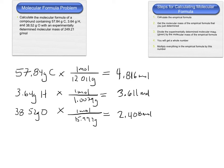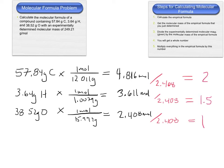We divide by the smallest, which is 2.408 for oxygen. That gives a ratio of 2 for carbon, 1.5 for hydrogen, and 1 for oxygen. With that 1.5, we need to multiply everything by 2 to get whole numbers. So our empirical formula is C4H3O2.